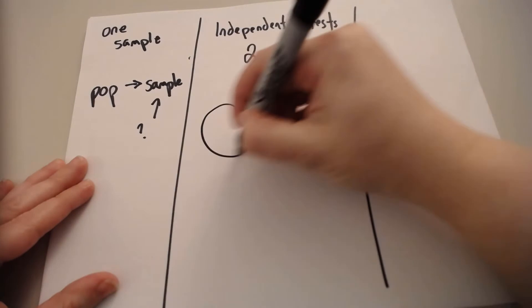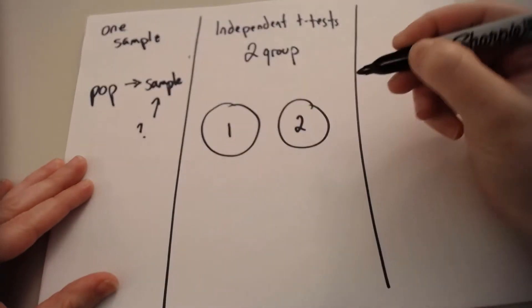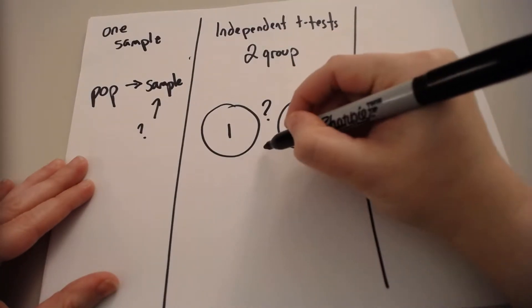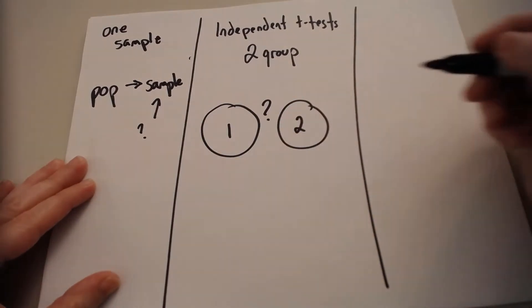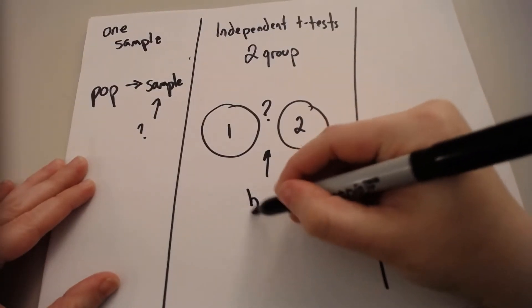In an independent t-test, there are two groups, group one and group two, and we're trying to see what is the difference between those two groups. Again, the difference is located between.